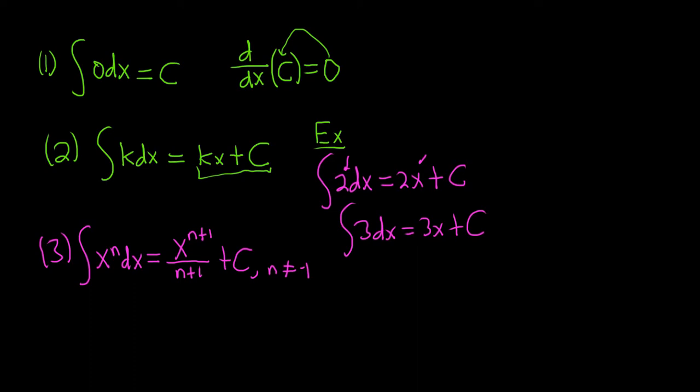And this formula is only valid if n is not equal to negative 1. You'll notice if n is equal to negative 1, you end up dividing by 0. If you're curious, and this is a bit premature, if you have negative 1, what happens is you get the natural log of the absolute value of x plus c. But this is later.